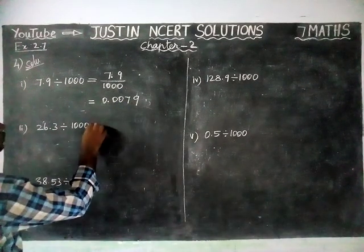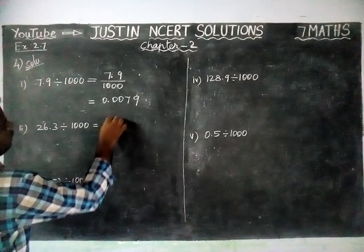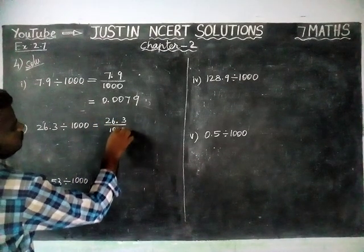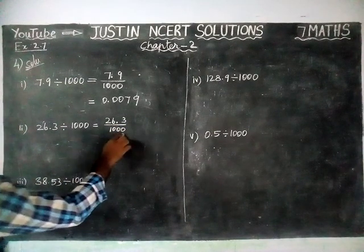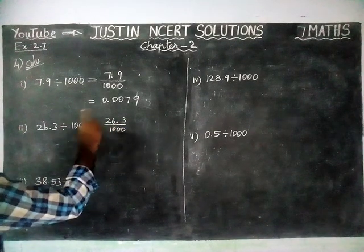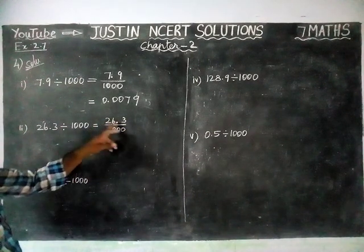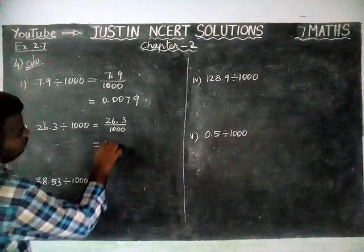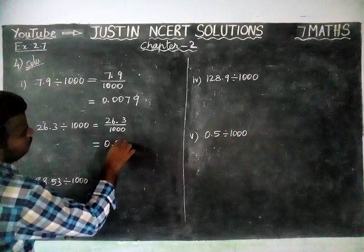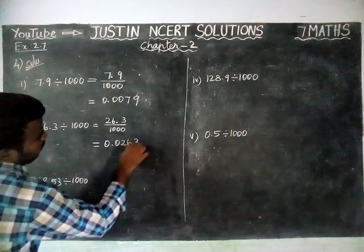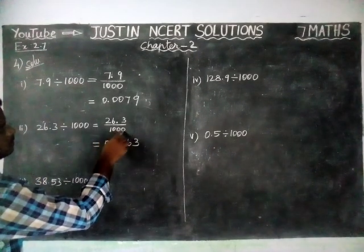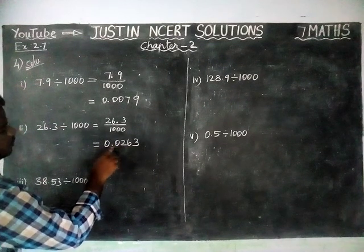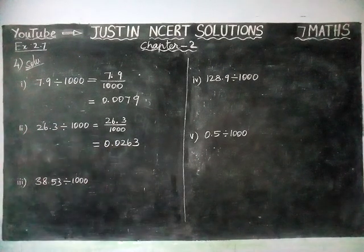Second question: 26.3 divided by 1000. The denominator has 3 zeros, so we have to move 3 steps to the left-hand side. But here we have only 2 digits before the decimal, so we are going to add a 0. Now we have 3 decimal places, giving us 0.0263.